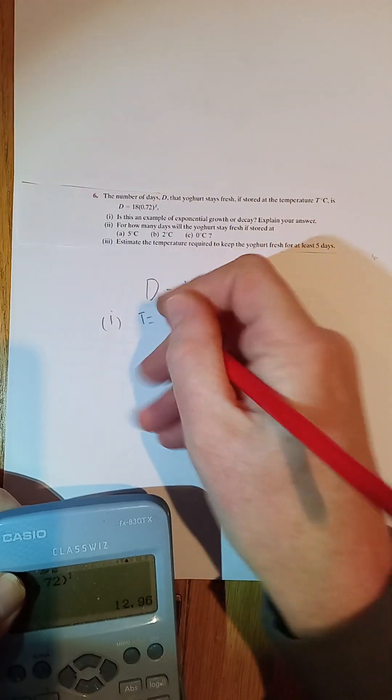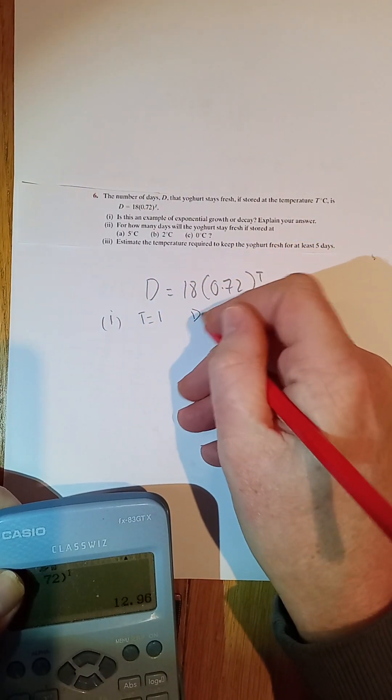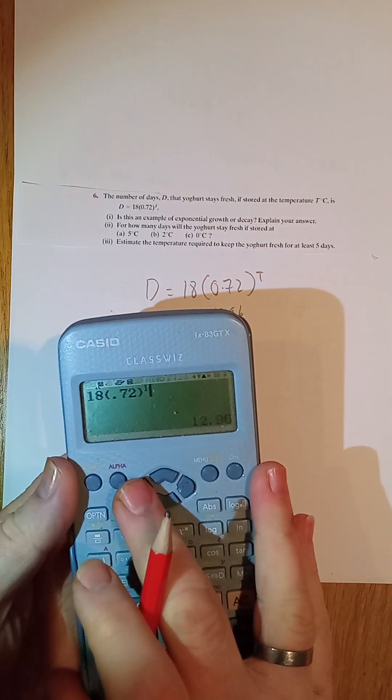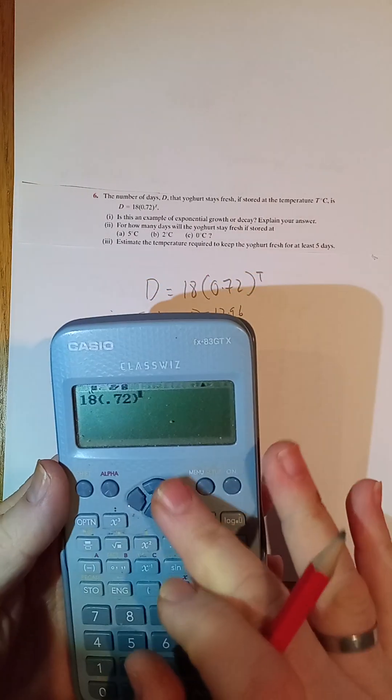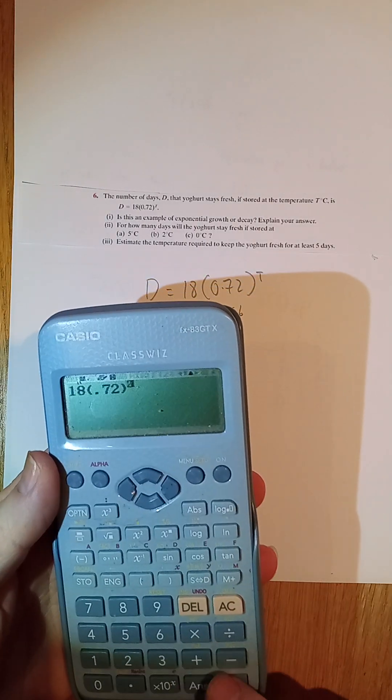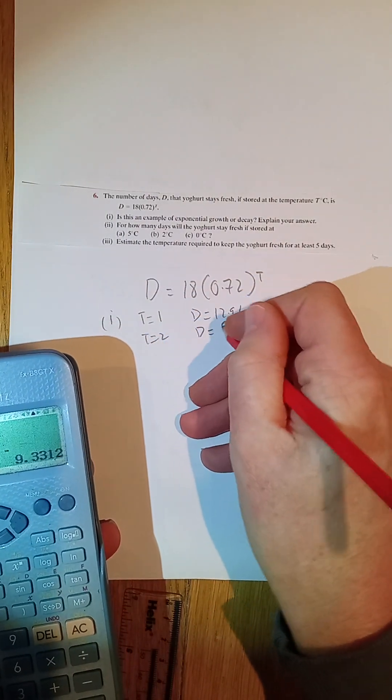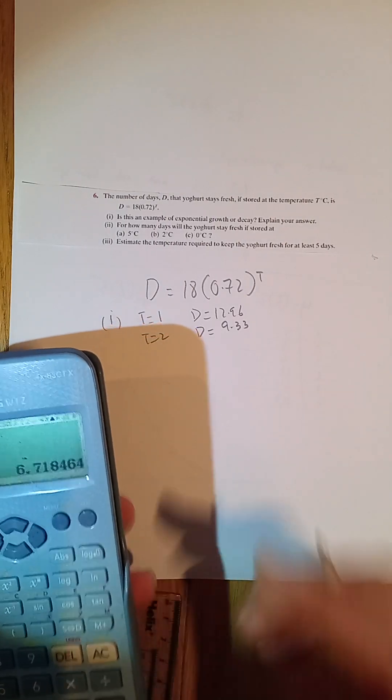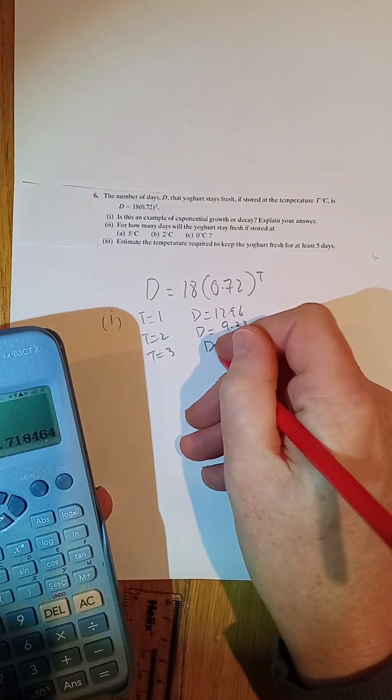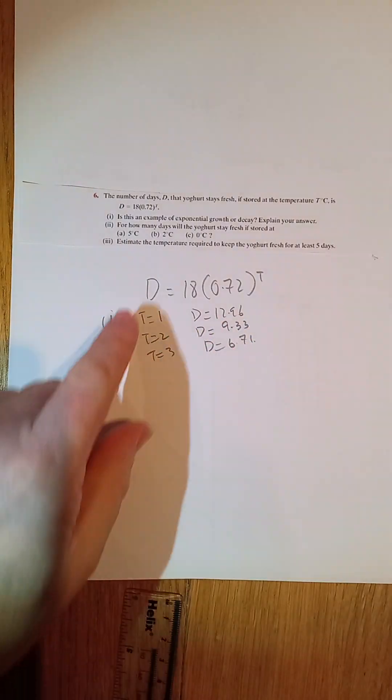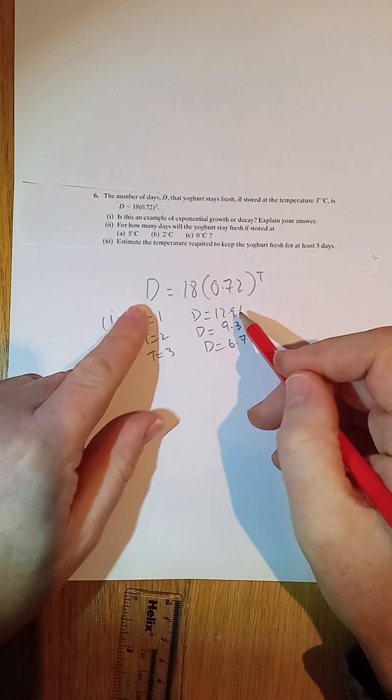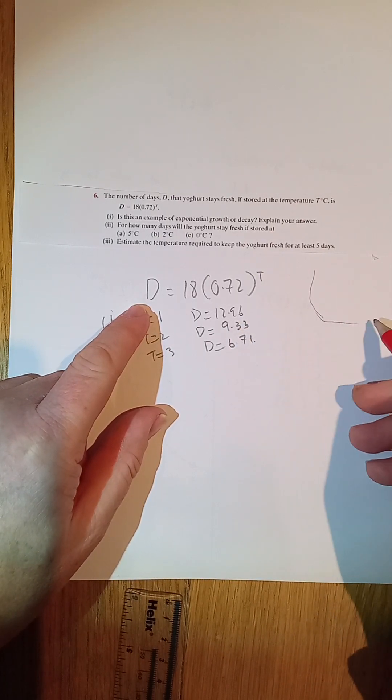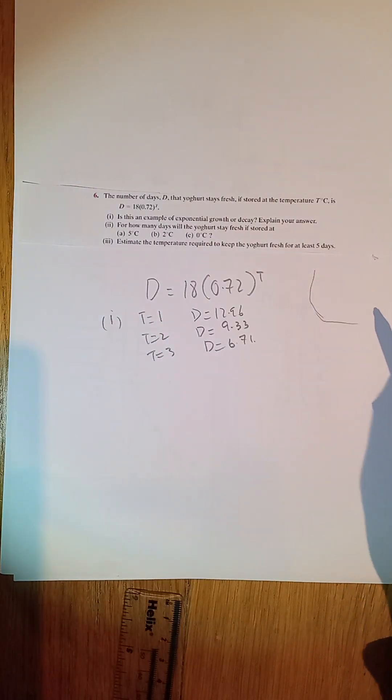I'll show you this with a little example. If I put in 18 bracket 0.72 close bracket to the power of 1, I get 12.96. So when T is equal to 1, I get D is equal to 12.96. Now, let's put in T equals 2. So all I have to do is go back in here, change that to a 2. Make it a 3, just to prove the point. So it's a decreasing function. As I increase the x value, in other words, I increase the T, the D, the y value gets smaller. So it's going that way, from a high number at the start to a lower number.